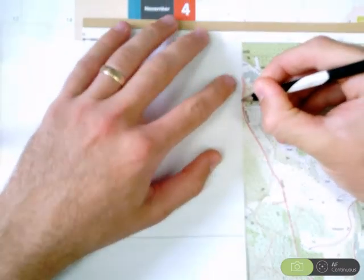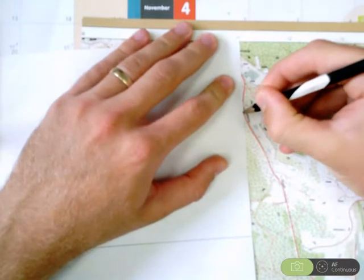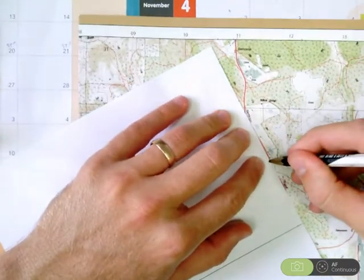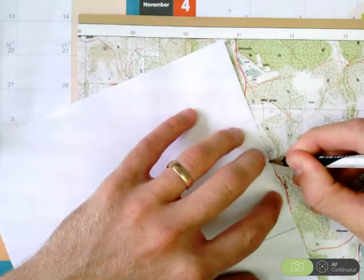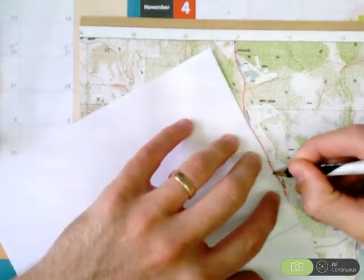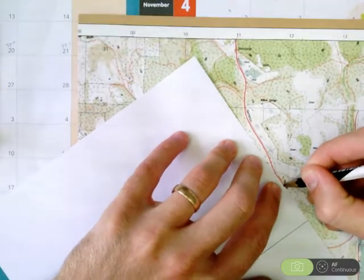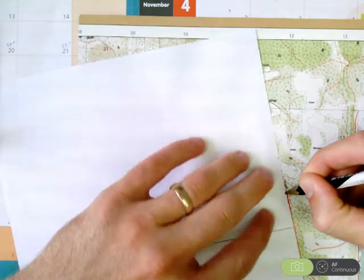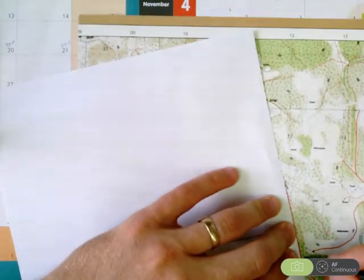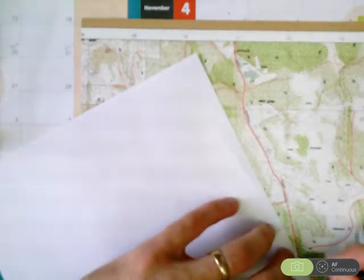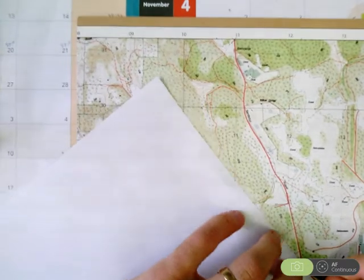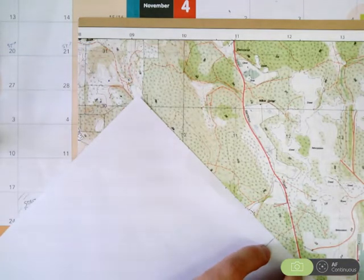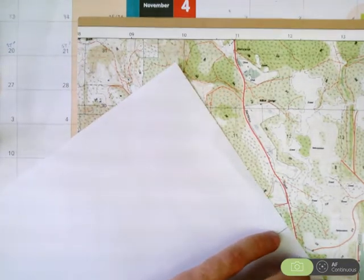Wherever the paper leaves the road, that's when you're going to start moving it again. And you work your way all the way from point A to point B. Try to be as accurate as possible. You can also use a string for this, there's other ways that you can do it. But, personally, this is the quickest way for me.